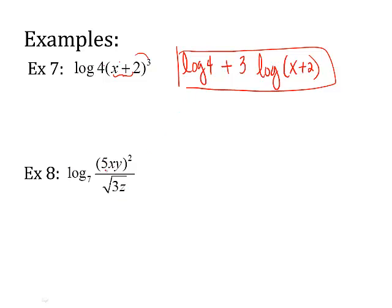And look at this guy. We've got lots going on. You've got a power in front of each of these terms that are being multiplied. So you can think of it as 5 squared times x squared times y squared so that you don't miss any of those powers. Down here, you've got 3z, all that under a square root, so think of that as to the 1 half power.